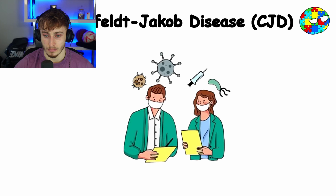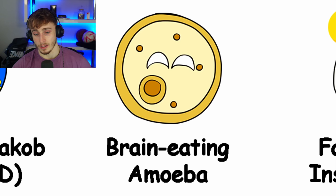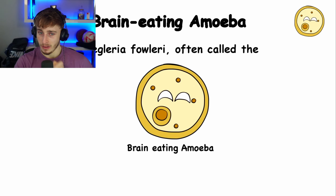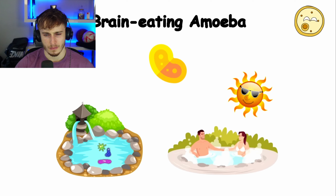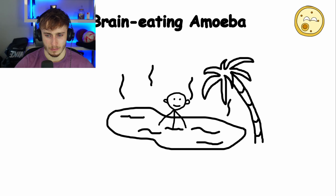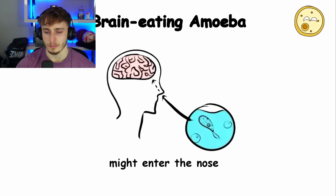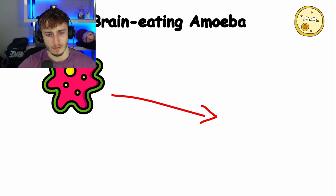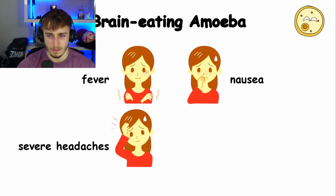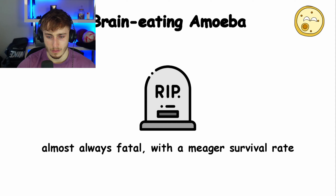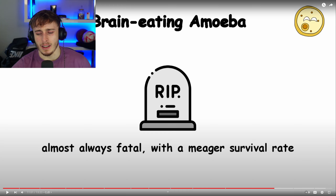Brain-eating amoeba. This sounds fun. Naegleria fowleri, often called the brain-eating amoeba, is a microscopic organism that lurks in warm freshwater environments such as lakes, rivers, and hot springs. Imagine dipping in warm natural water on a hot summer day — most of the time it's a delightful experience. But occasionally, if the conditions are just right, Naegleria fowleri might enter the nose. Once inside, it travels up the olfactory nerve and can cause an extremely severe brain infection. This amoeba's presence in the brain can lead to symptoms like severe headaches, fever, nausea, and a stiff neck — making it feel like a science fiction plot unfolding in real life. PAM is typically swift and almost always fatal. God damn, imagine getting a disease like that from going in the water.